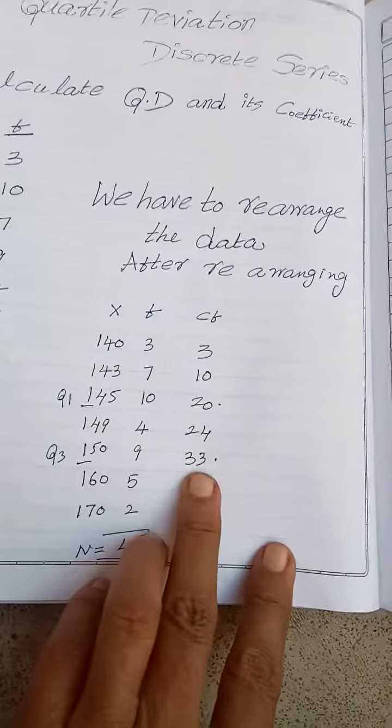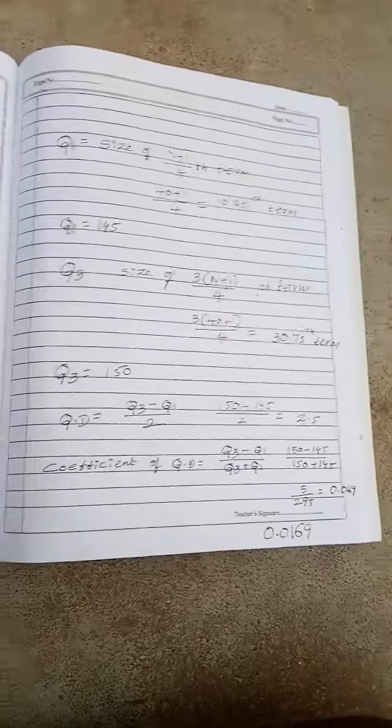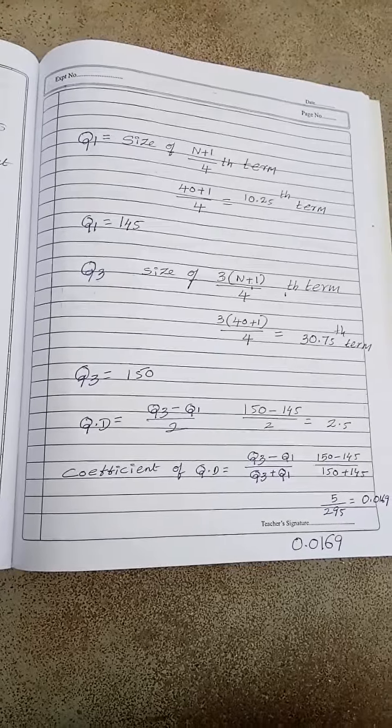Similarly, I have done Q3 also, 3 into n plus 1 by 4. I got 30.75. 30.75 I am getting here. So Q1 and Q3 both I have.